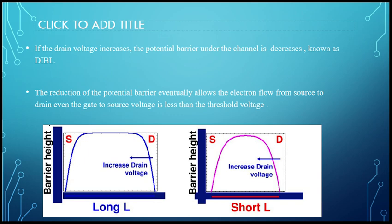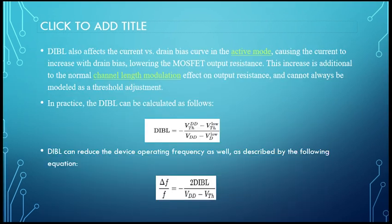As you can see in the picture, for long L, when the drain voltage increases, versus short L where the drain voltage increases, the potential barrier decreases. You can see the comparison in the picture.